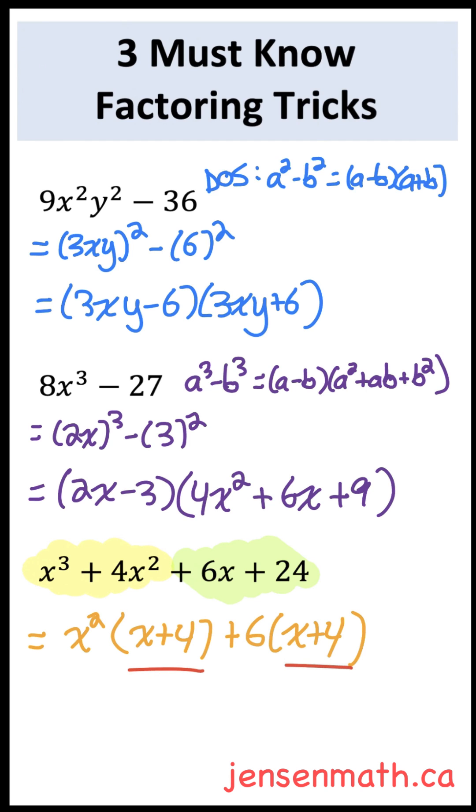And now there's a common binomial of x plus 4. So we can factor out the x plus 4 from both terms, and you're left with x squared plus 6 as your second factor.